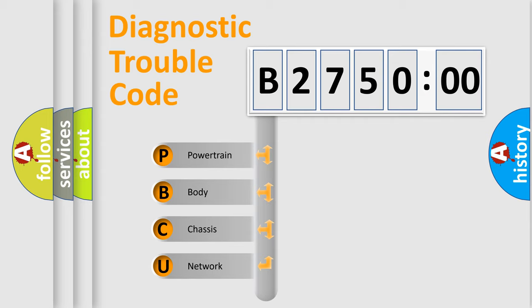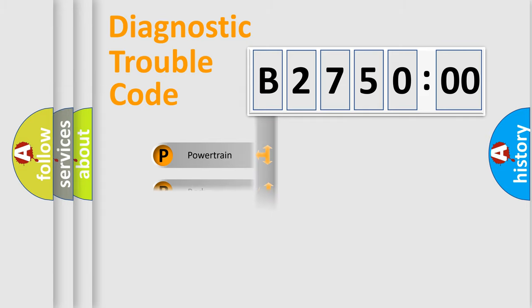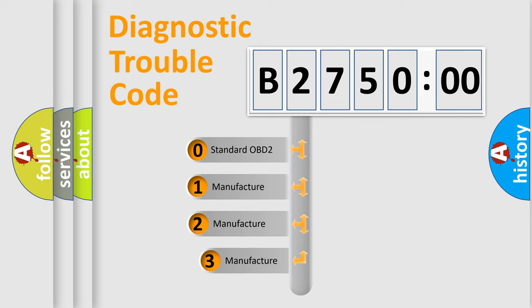We divide the electric system of automobile into the four basic units: Powertrain, Body, Chassis, Network. This distribution is defined in the first character code.